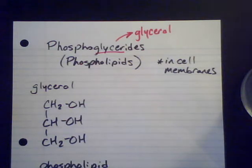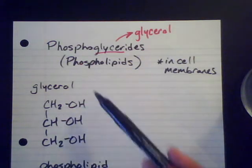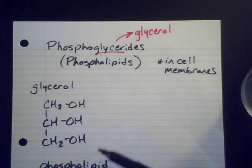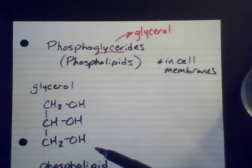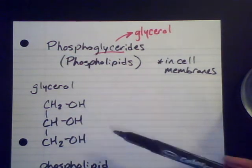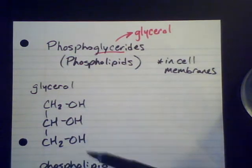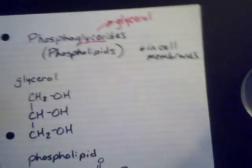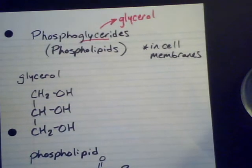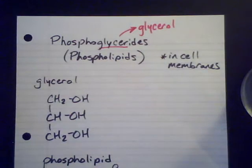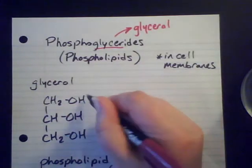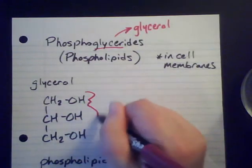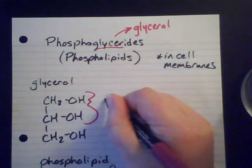Phosphoglycerides are going to still have this glycerol backbone. This is our glycerol here, and the type of chemistry is going to be the same - it's all going to be around these alcohol groups. But instead of being all fatty acids, two out of three of them are going to react with a fatty acid chain.